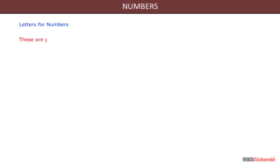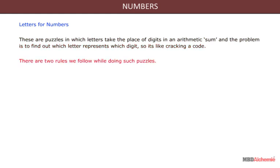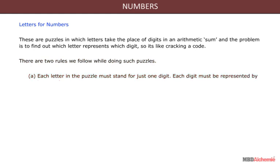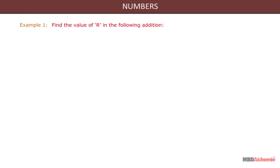Letters for numbers: these are puzzles in which letters take the place of digits in an arithmetic sum, and the problem is to find which letter represents which digit — like cracking a code. There are two rules: first, each letter must stand for just one digit and each digit must be represented by just one letter. Second, the first digit of a number cannot be zero.